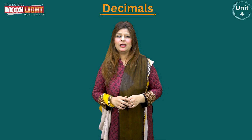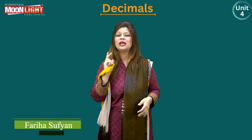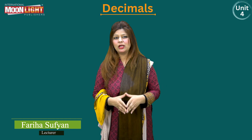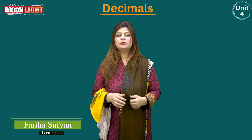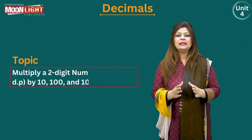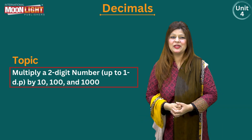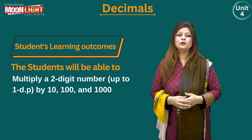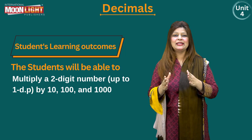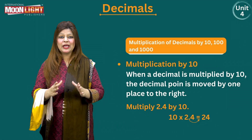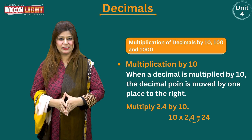Assalamu alaikum, my dear students. Hope you all are doing well and enjoying my digital lectures. I'm Priya Sufyan, your mathematics teacher. I warmly welcome you all on the platform of physical economics provided by Moonlight International Publishing. Today my topic is: multiply a two-digit number up to one decimal place by ten, hundred, and thousand. By the end of this lesson, you will be able to multiply a two-digit number up to one decimal place by ten, hundred, and one thousand.